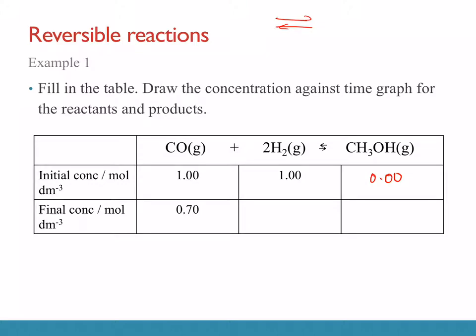Let's look at this example. The starting value is zero. Sometimes they give you the initial concentration, initial amount, initial partial pressure, or initial volume of the reactants or products, and then they tell you the final concentration at equilibrium. At equilibrium, for carbon monoxide there is a decrease of 0.3 mol/dm³. Since the reactant to product ratio is 1:1, what should happen at the product stage?